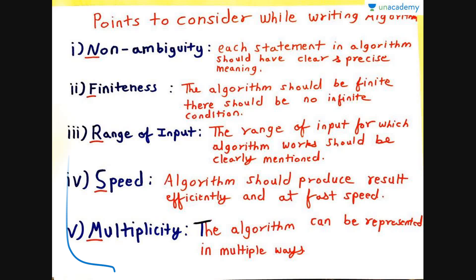Need for Speed is a Multiplayer game. All the points of the algorithms are covered in it. So let us go through it quickly. Non-ambiguity means it should not be confusing. Finiteness means it should not go in infinite loop. Range of input - you should mention the range of input for which the user should enter. Speed means it should be fast. Multiplicity means it can be represented in multiple ways. Now let us move to the next slide.